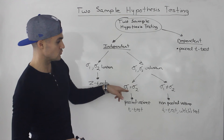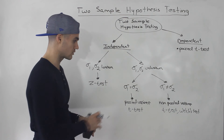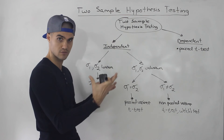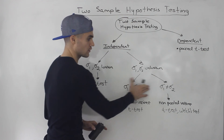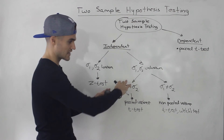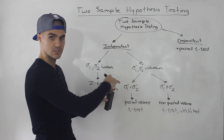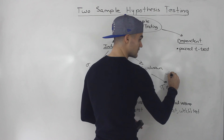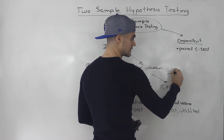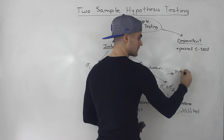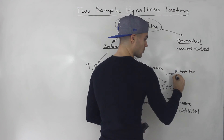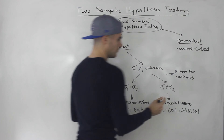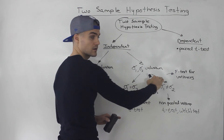Sometimes you won't know whether the population standard deviations of the two populations are equal or unequal. There's actually a test for that — it's called an F-test for variances, which essentially helps you determine which branch to take.